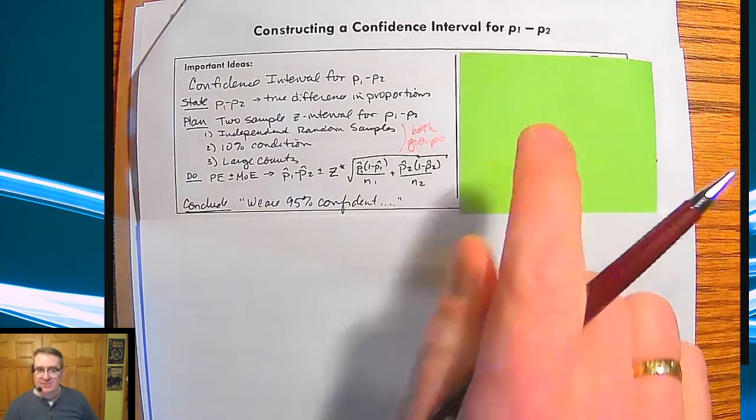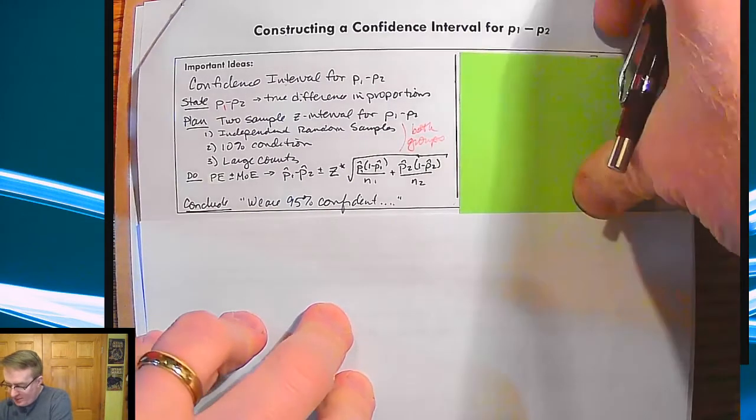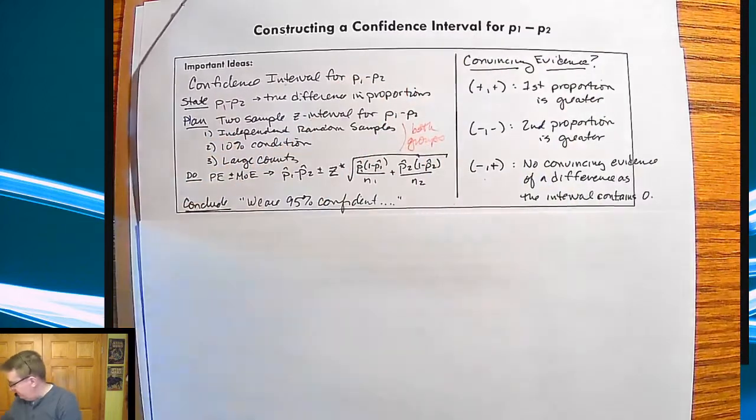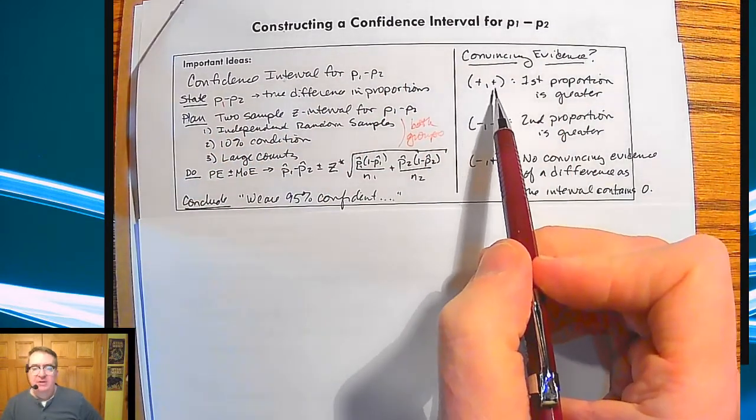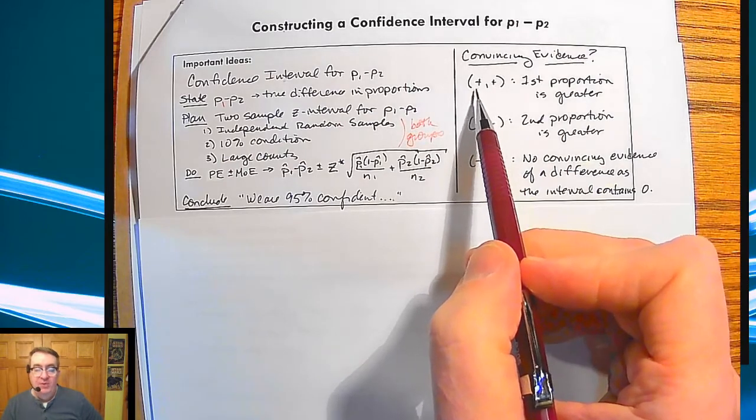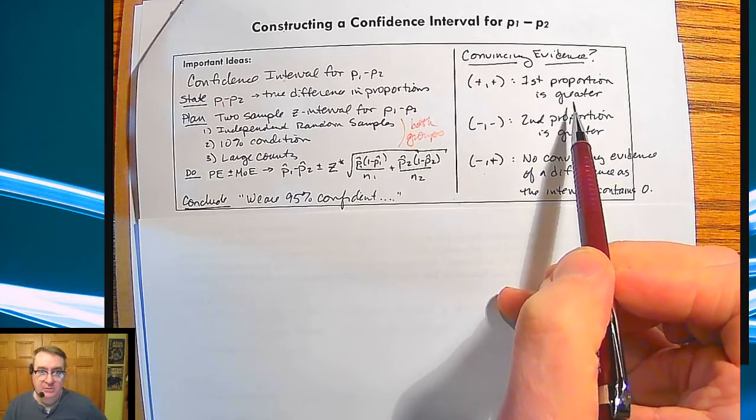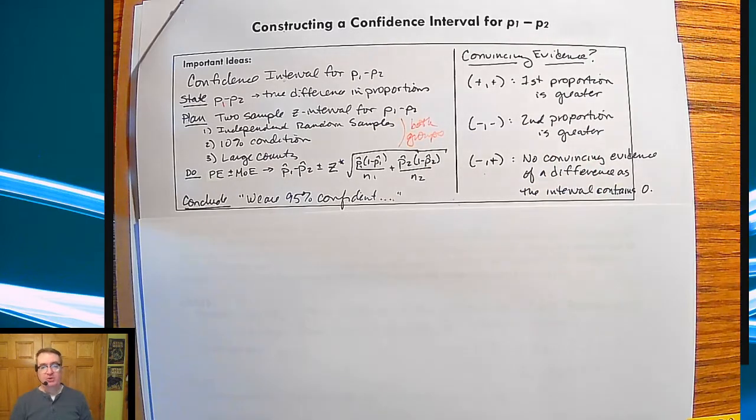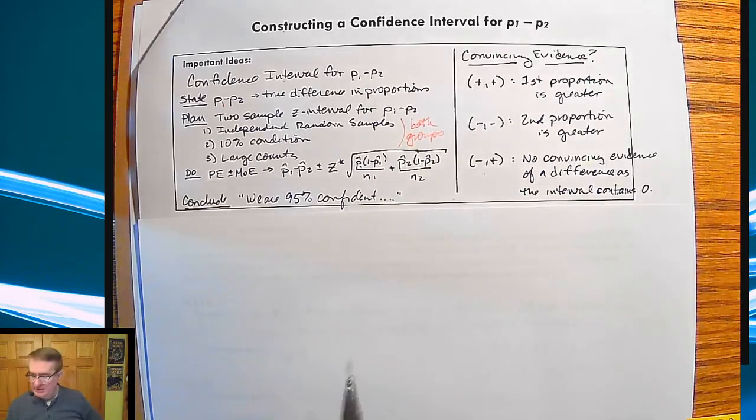Now, some interesting things because this is, for example, you want to know the difference between, is this one vaccine really better than this other vaccine? And so what the confidence interval will tell you is this. If the confidence interval have both ends are positive, that means that the first proportion is going to be greater. We know that the first proportion is greater by at least this and up to this is kind of what that's saying.